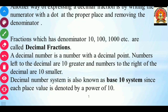So friends, this decimal number system is also known as a base 10 system. Why? Because each place value is denoted by a power of 10. We are having a decimal point, and to the right we are having some digits and to the left we are having some digits. We will see.